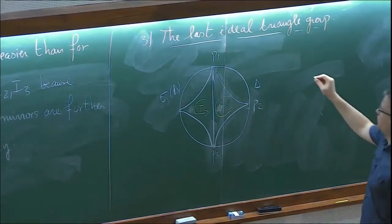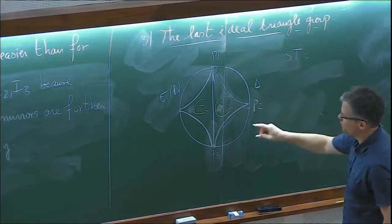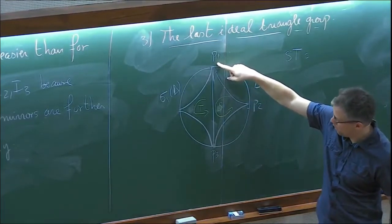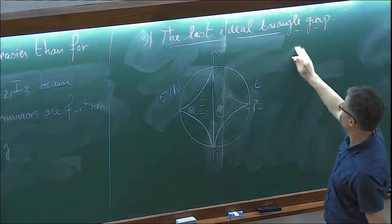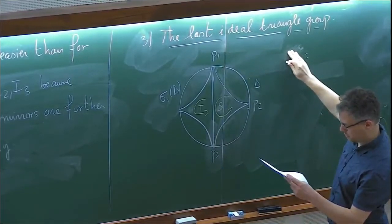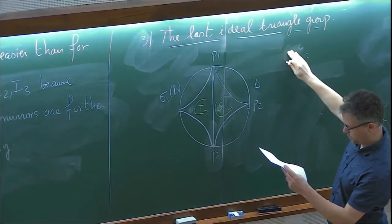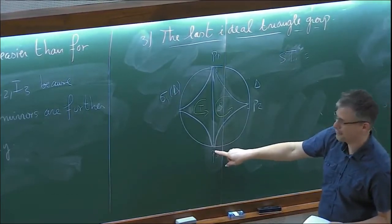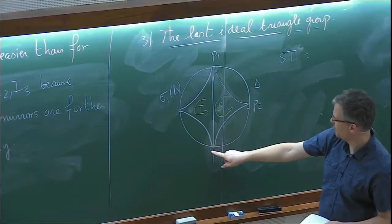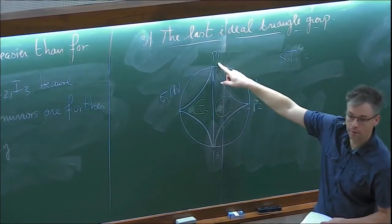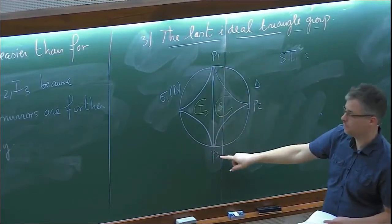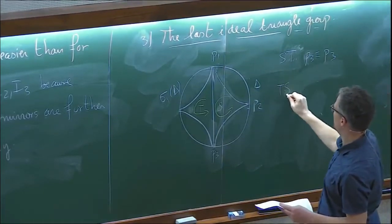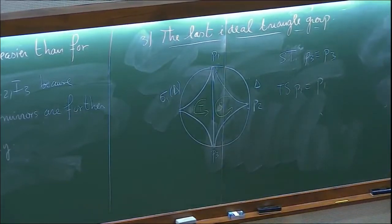Let's look at the product S, T. If I apply it to P3: T maps P3 to P1, and then S maps it back to P3. So S·T of P3 equals P3. Similarly T·S of P1 equals P1. These two elements S·T and T·S are actually parabolic.